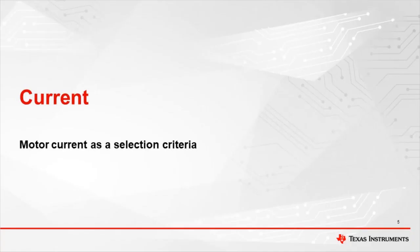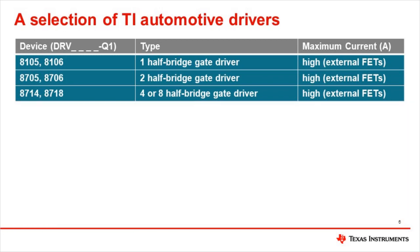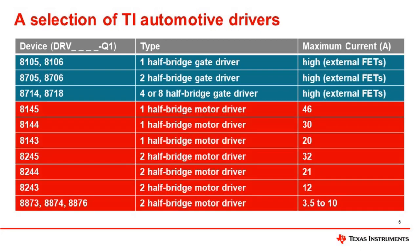Let's look at motor current as one way of deciding which motor driver IC to choose. This table summarizes some of the popular automotive drivers for brushed DC motors. The top blue rows are gate driver devices, which use external MOSFETs but otherwise integrate all the features needed to drive high current motors. The maximum current they can drive is limited only by the characteristics of the external FETs. The middle red rows are motor drivers with integrated MOSFETs with a wide range of maximum current capability, offered as either single half bridges or full bridge to half bridge devices. The bottom pink row is a family of multiple half bridge drivers with integrated FETs, well suited for applications where several channels of relatively low current are needed.